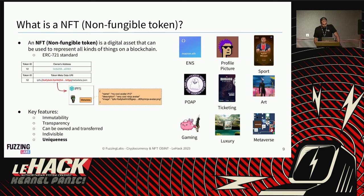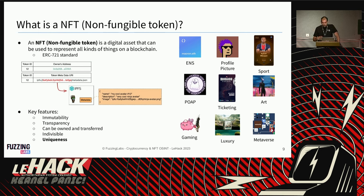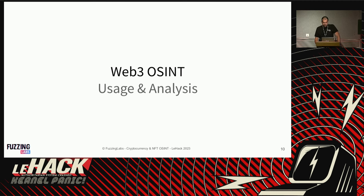For example, ENS — as shown with macron.eth — is an NFT usage corresponding to a domain name. What's really important for us is that an NFT is unique and associated to a user, and we can leverage NFTs to get more information about the owner, giving us a lot of useful data.